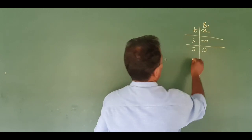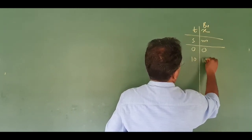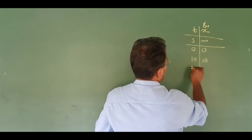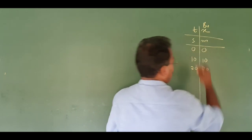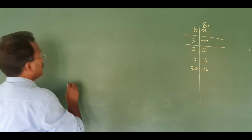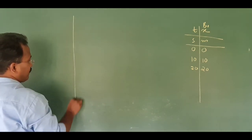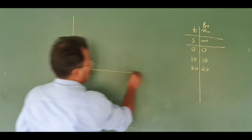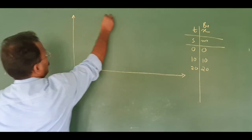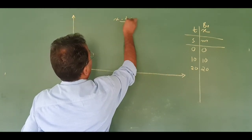Let's take a look at the distance. In 10 seconds, the bird has traveled 10 meters. In 20 seconds, the bird has traveled 20 meters. This is the X-T graph.